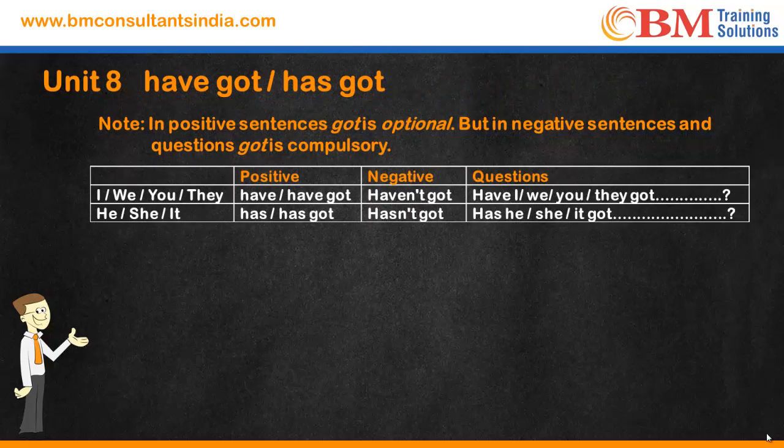Let's look at the summary. With I, we, you, they — in a positive statement, use 'have got.' With he, she, it — use 'has' or 'has got.' In a negative statement, use 'haven't got' with I, we, you, they, and 'hasn't got' with he, she, it. When framing a question, we use 'have' or 'has.' These are the short forms available.